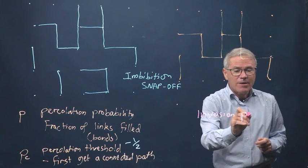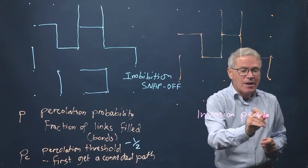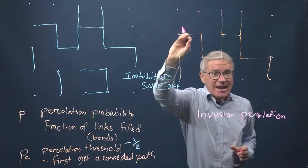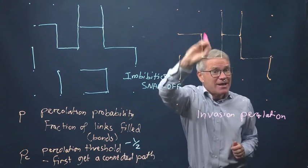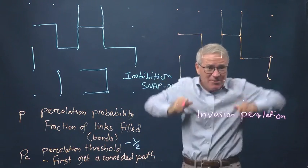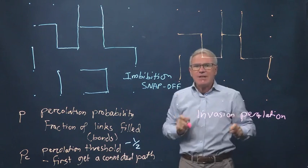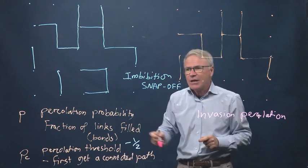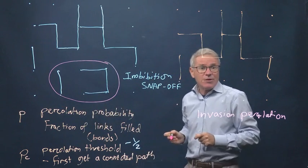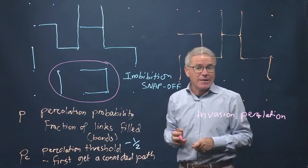So what you'd notice here is that if we had an invasion percolation process where we fill, again, apparently at random, but it is in order of size, but you have to be connected from the inlet because the non-wetting phase has to be connected. We have a similar pattern, it's percolation-like, but we don't fill these regions, we don't fill anything that's disconnected.